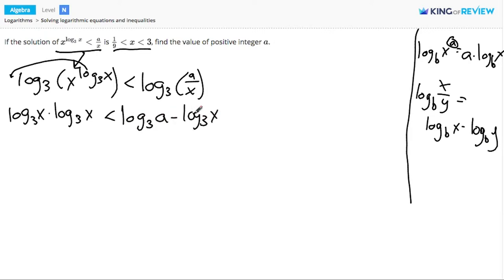Now let's see, I'd like to bring all of my terms over to the left side of the problem. And we have the log base 3 of x. I have it multiplied by itself, so that's squared. I'm going to bring the log base 3 of x over to the left side, plus log base 3 of x. And if I bring the log base 3 of a to the left side, it becomes minus log base 3 of a is less than 0.